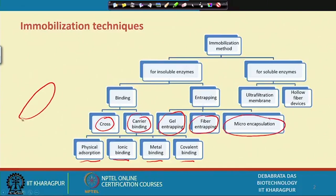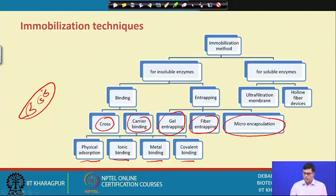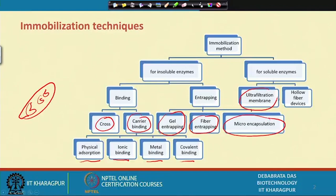Microencapsulation is where the enzymes are immobilized inside an envelope — very small capsules, similar to how medicine is placed inside a capsule. For soluble enzymes, immobilization can be done by ultrafiltration, where the membrane size is very small, or by a hollow fiber device, where enzymes are added on the surface of the solid matrix.